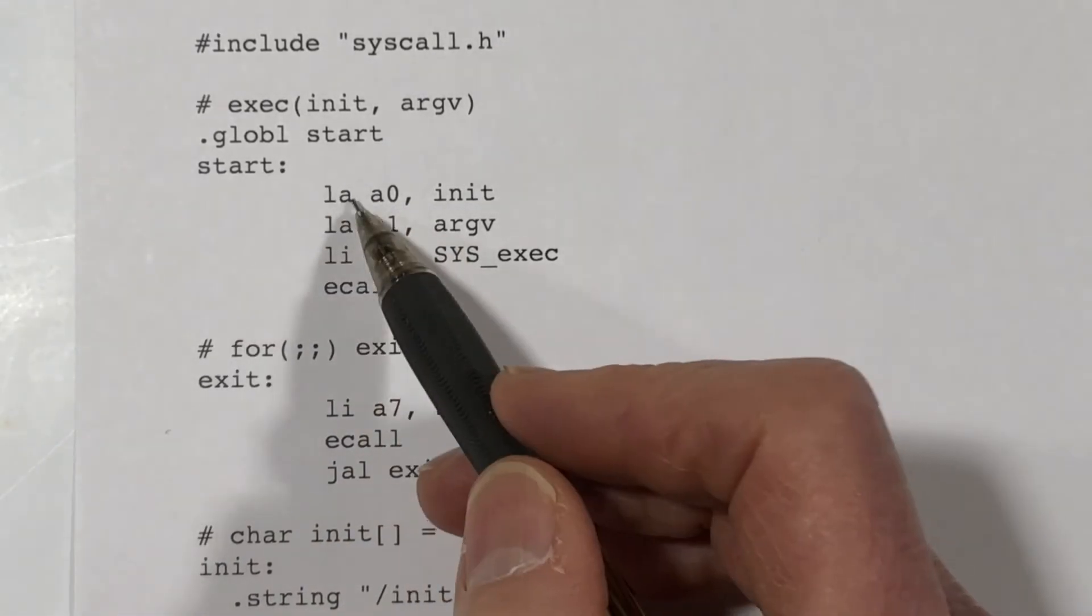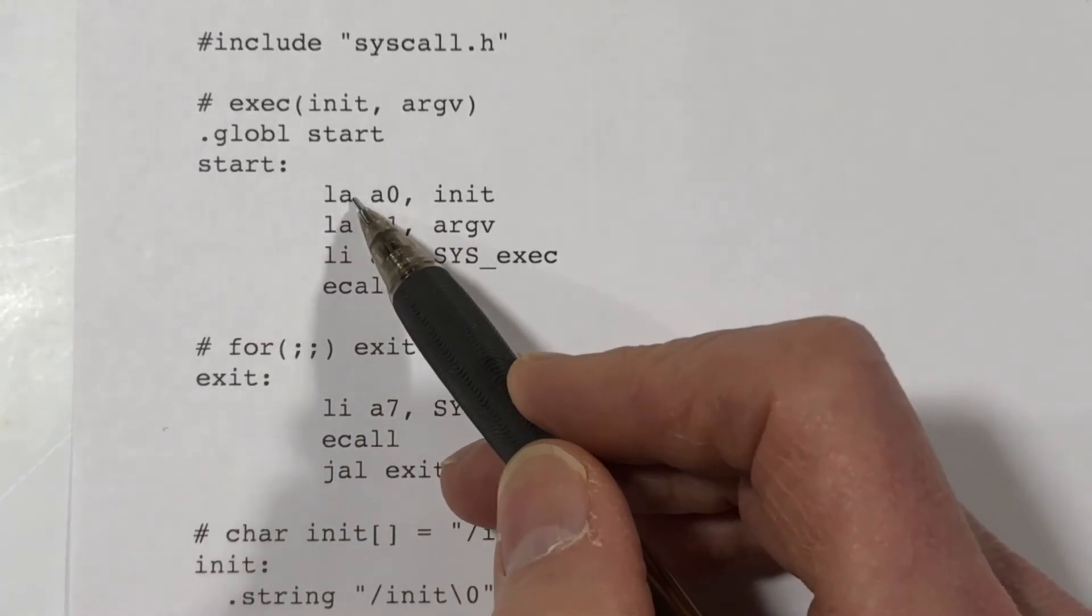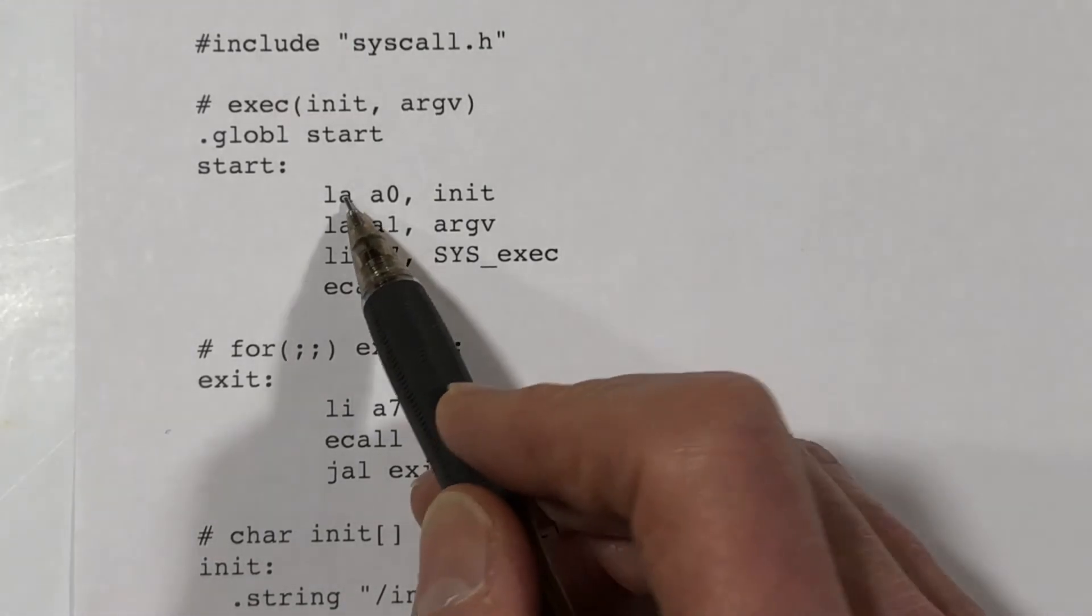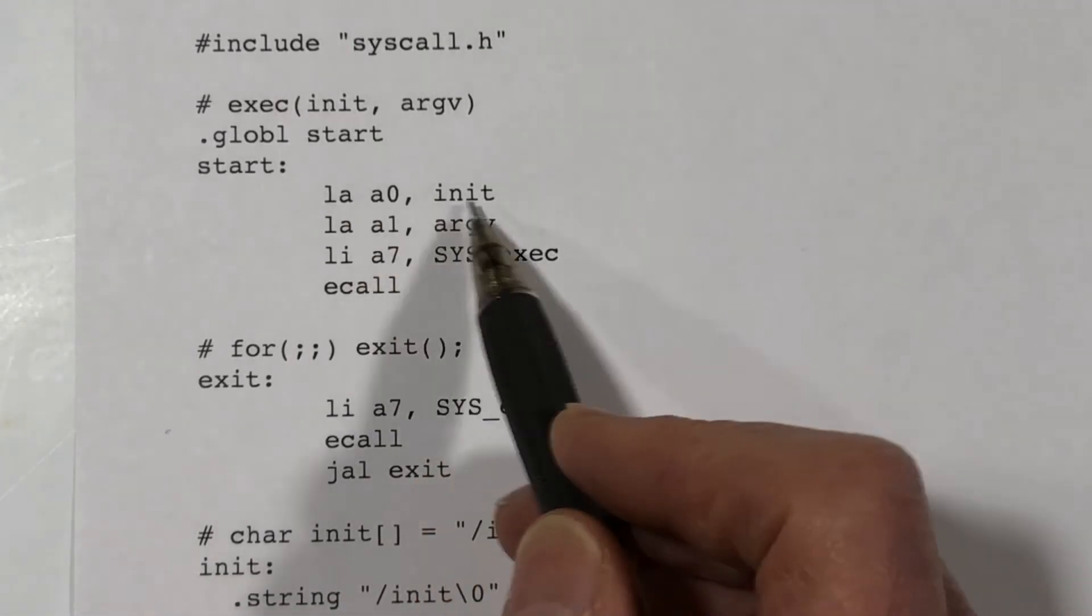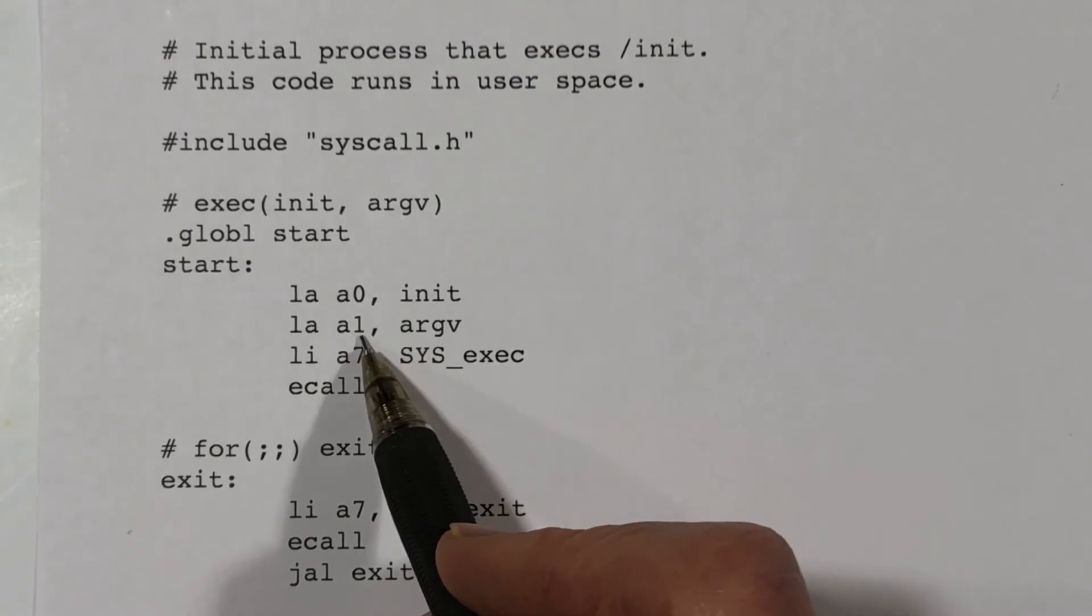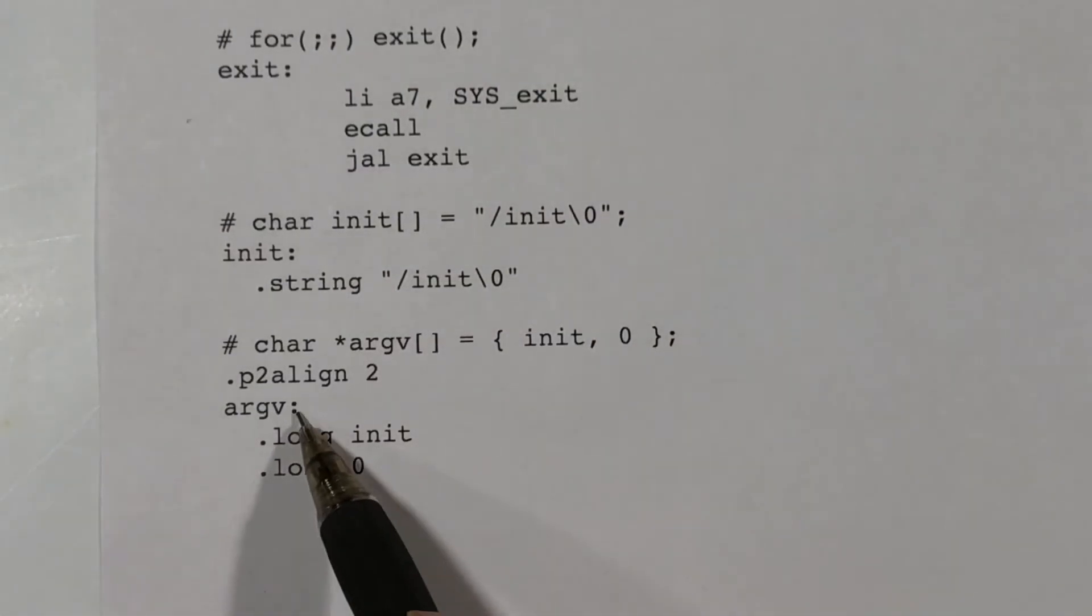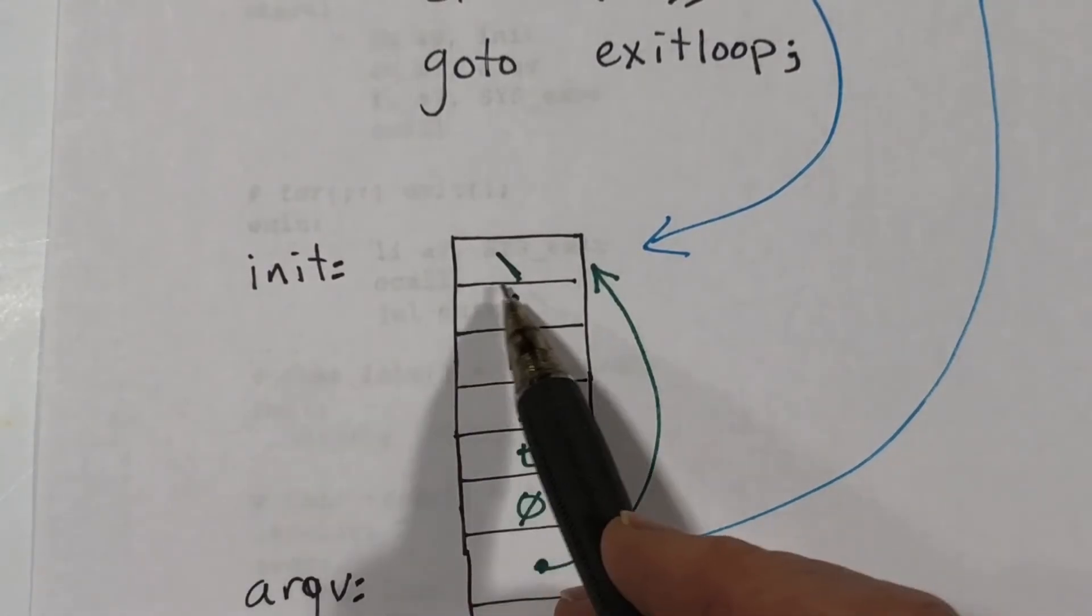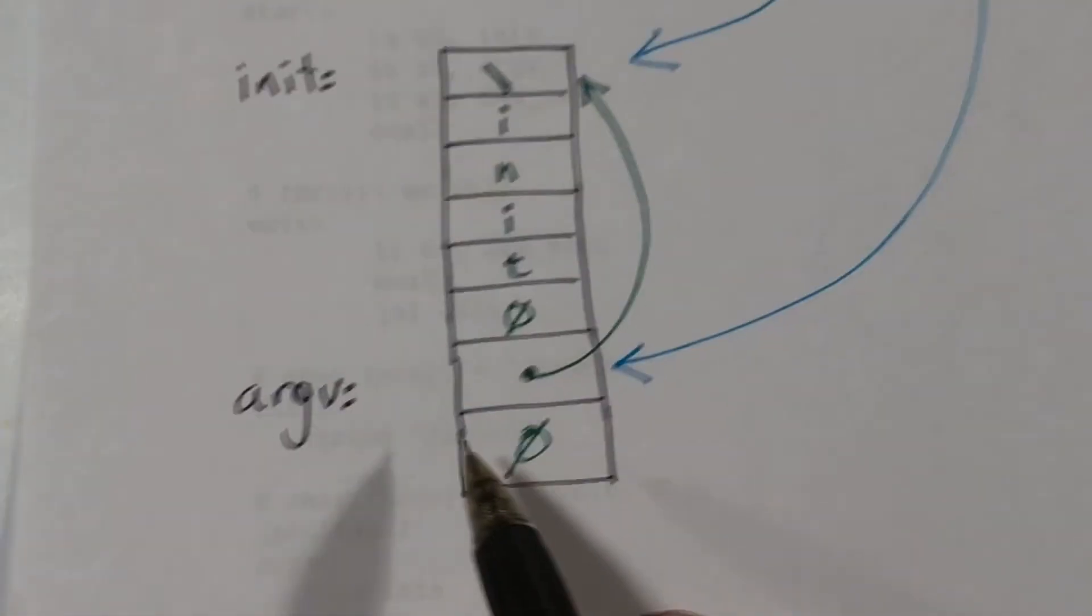And what do we have? Well, we are executing three instructions and then making the system call. LA loads the address into A0 of variable init, which is down here. This second instruction loads A1 with argv, which is the address of this down here. Here we have exactly what's going on right here. init, and these bytes, and argv, and these two words.